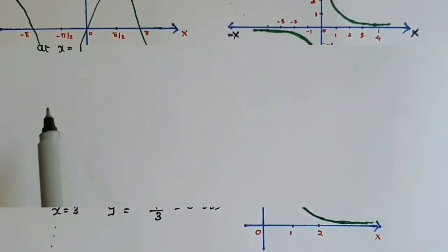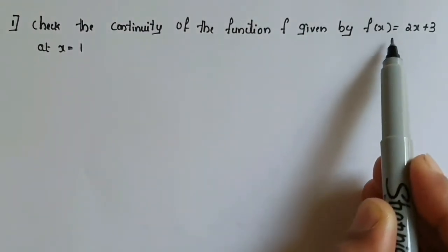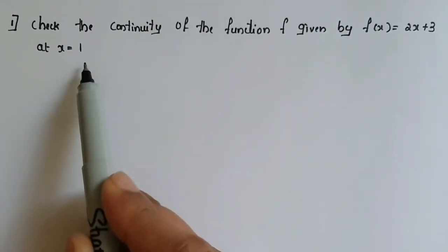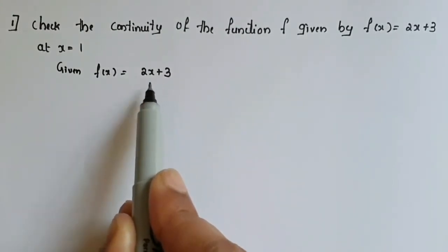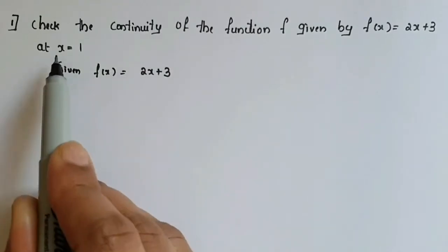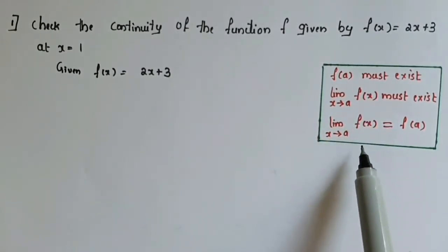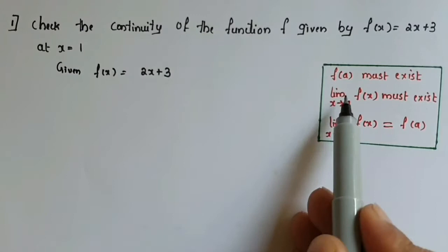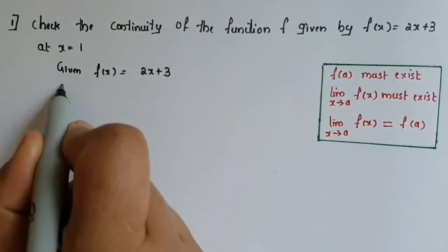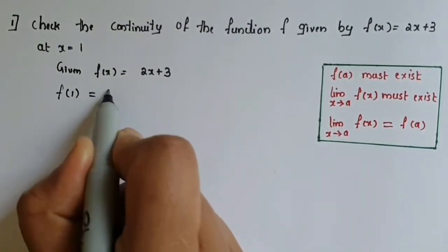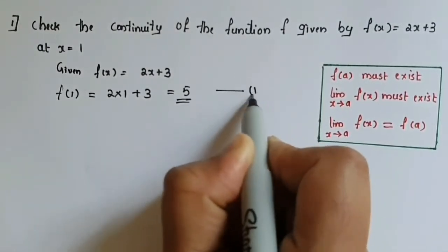Question 1: Check the continuity of the function f given by f of x equal to 2x plus 3 at x equal to 1. Given f of x equal to 2x plus 3, we check the three conditions. First condition: f of 1 equals 2 times 1 plus 3, which equals 5. This is a finite value, so the first condition is satisfied.